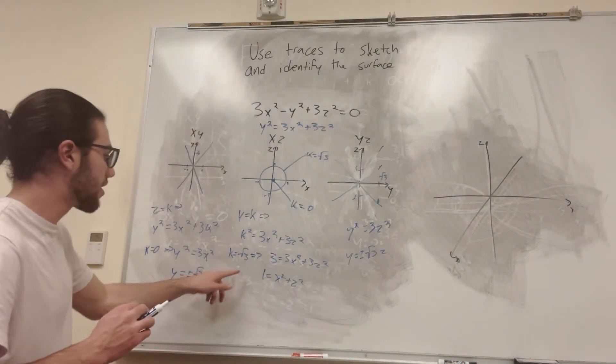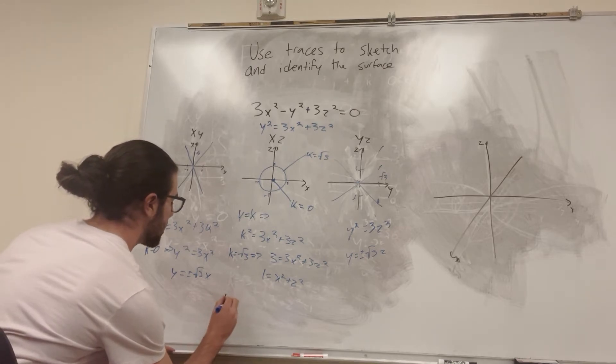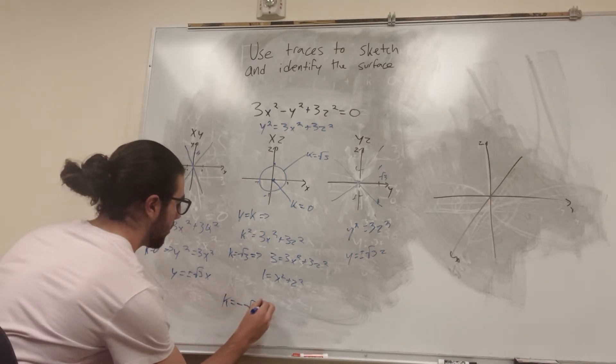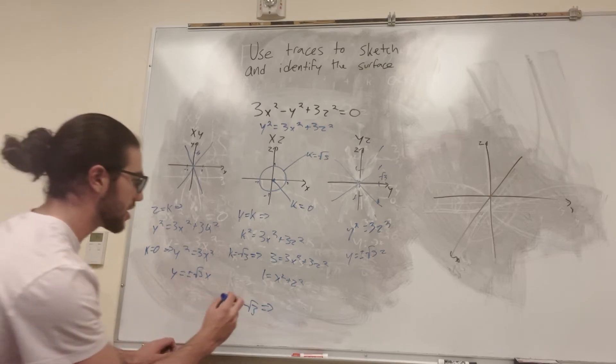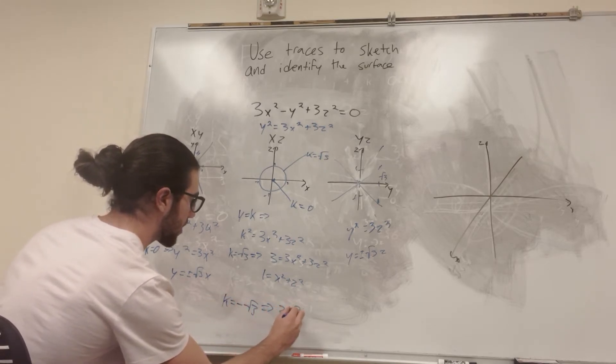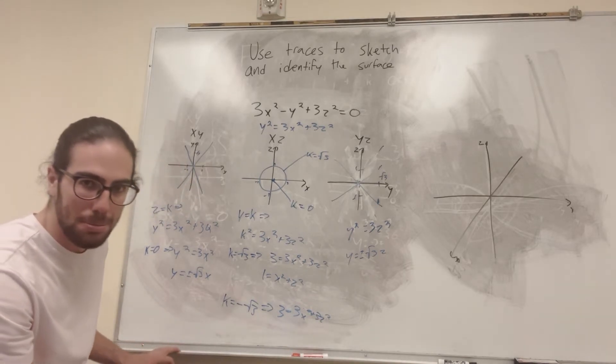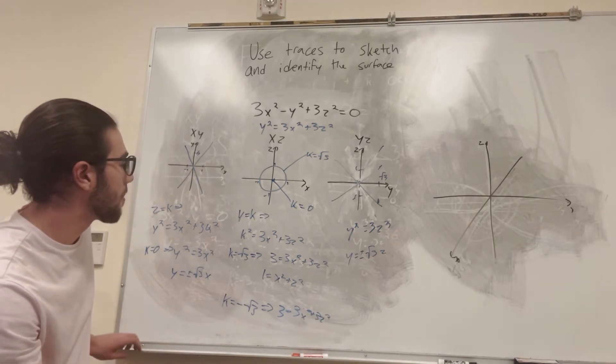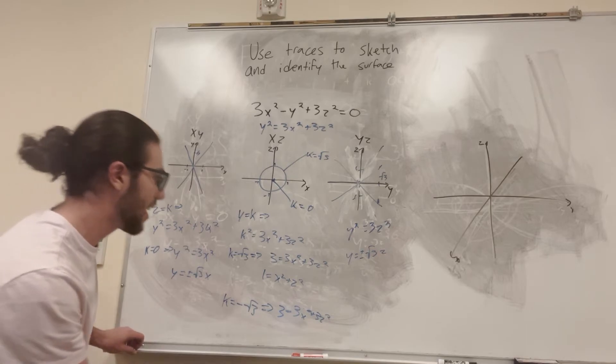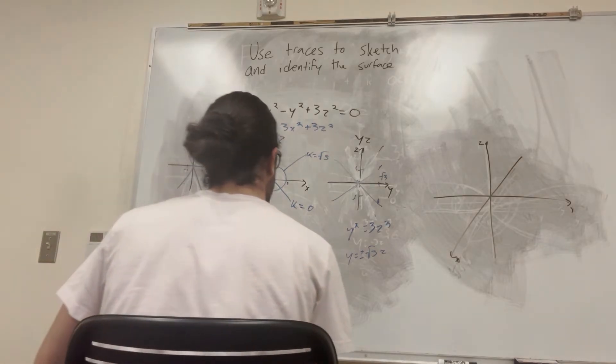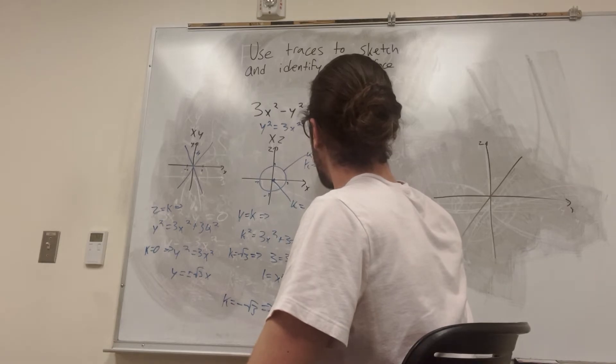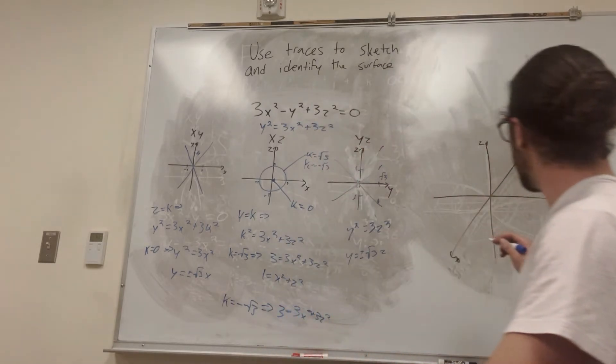So we have k is equal to square root of 3. What if we do k is equal to negative square root of 3? Well, that gives us the same thing, because negative square root of 3 squared is just 3. k is equal to 3x squared plus 3z squared. And what that tells us is that it's going to be mirrored, basically, across the y-axis. It's going to be the same on both sides of the y-axis. This is k equals negative square root of 3.